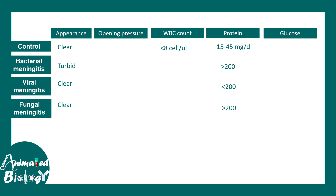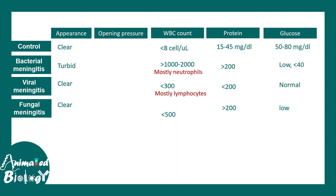The WBC count should normally be very low. If there is more WBC in the CSF, there is some kind of infection. If mostly neutrophils are elevated, it may be bacterial meningitis. If mostly lymphocytes are elevated, it may be viral meningitis. Glucose utilization is also important — bacteria consume a lot of glucose, so in bacterial meningitis the glucose level is very low. In fungal meningitis the glucose level is also low. Elevated opening pressure most likely indicates bacterial meningitis.